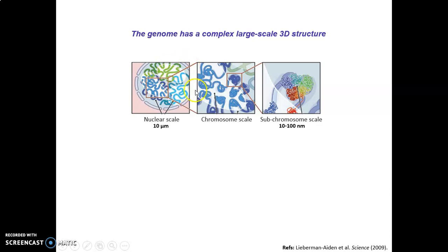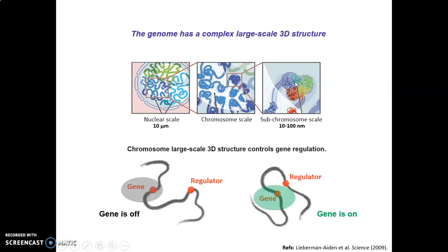But if we look deep inside a single chromosome, up to a length of 10 nanometers, we find that the DNA is folded into an intricate structure of domains interacting with each other. What is truly astonishing is that this complex 3D organization of the genome is not random, but it's linked to the activity of the genes. In other words, chromosome large-scale 3D structure controls gene regulation.